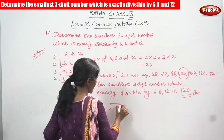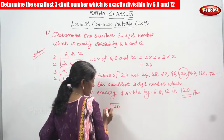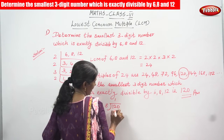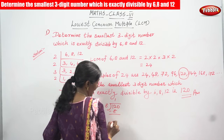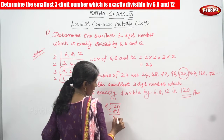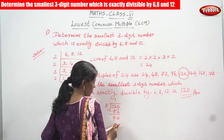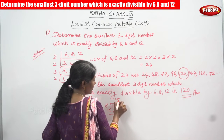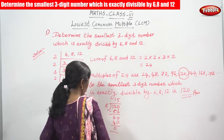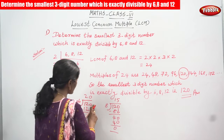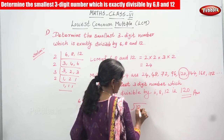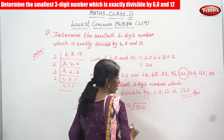Next, we check whether 120 is divisible by 8. 1 × 8 = 8, remainder 12 − 8 = 4, bring down 0 to get 40. 5 × 8 = 40, so quotient is 15 and remainder is 0. So 120 is divisible by both 6 and 8.